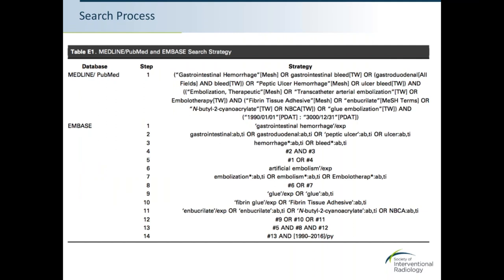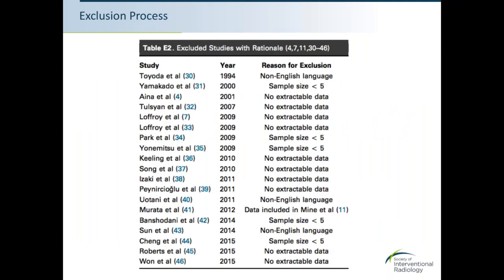The study begins with a thorough literature review, searching Medline, PubMed, and Embase databases from 1990 to 2016. Initial screening immediately removed case reports, review articles, letters, editorials, and standalone conference abstracts. Full text was then evaluated against selection criteria: non-variceal bleeding, treatment with embolization using NBCA alone or in conjunction with other embolics, published in English with greater than five patients, no data overlap with subsequent articles, and presence of extractable data.